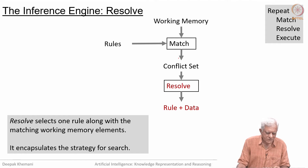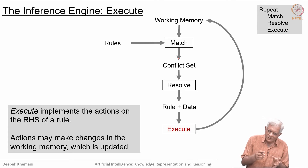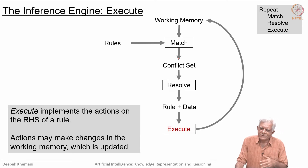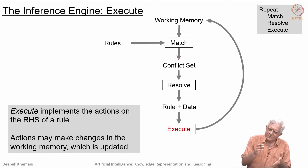The conflict to be resolved is which rule to select from the set of matching rules. The match step produces the conflict set — these are the possible rules that you can fire. The resolve step simply selects one of the rules, depending on the conflict resolution strategy being used; we will look at a couple of strategies as we go along. The execute step takes the one selected rule along with the data it matches, goes to the actions on the right-hand side, and executes them. Most of the time the actions say to add a new working memory element or delete working memory elements — which takes us beyond classical logic — and then you go back and match all over again.